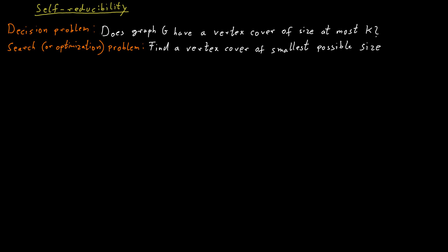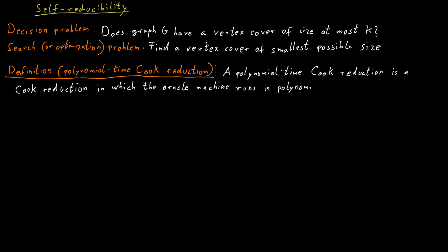So what we will do is, we will define something called the polynomial time Cook reduction. A polynomial time Cook reduction is just like a Cook reduction, but we require that the oracle machine runs in polynomial time. Now self-reducibility means that the search version of a problem polynomial time Cook reduces to the decision version of the problem. And this holds for all the problems we discussed.